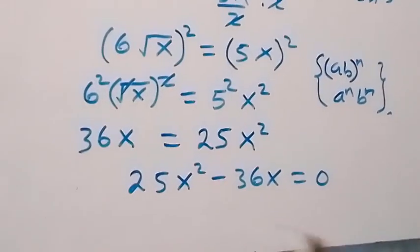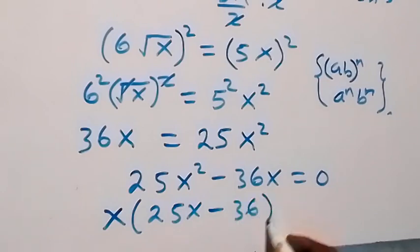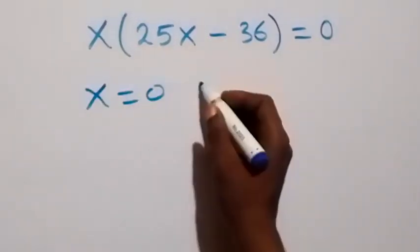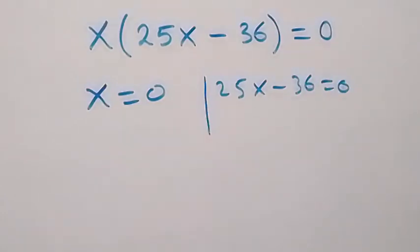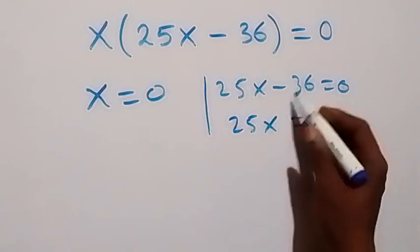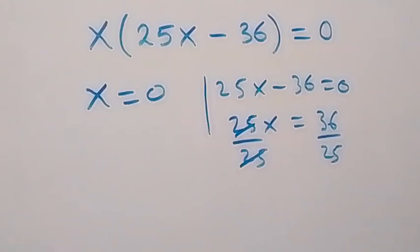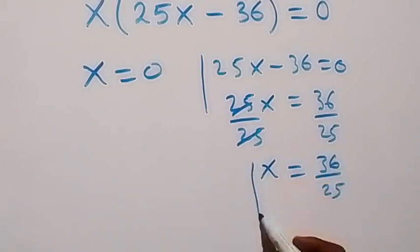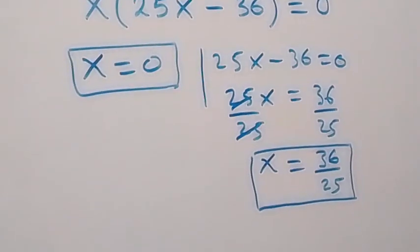Factoring out what is common — simply factor x out — we have x times (25x minus 36) equals 0. Here we have two possible cases: x equals 0, and 25x equals 36, which gives x equals 36 over 25. So we have x equals 0 and x equals 36 over 25.